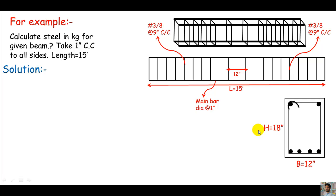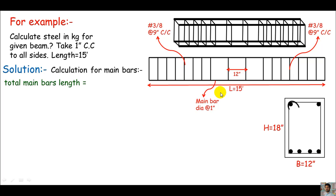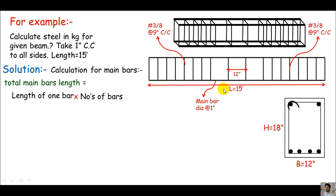My first approach will be the main bars. Let me calculate the weight of the main bars in kg — it's quite simple. For the weight of the main bars I just need the total length of the main bars. There are 6 main bars — 3 at top and 3 at bottom. The length of one bar times the number of bars gives the total main bar length. The total beam length is 15 feet; I'll subtract two times the concrete cover — one for each side.